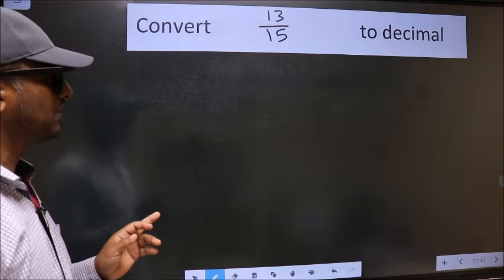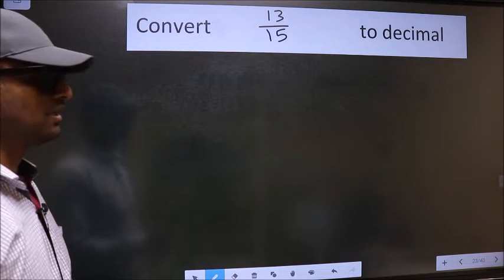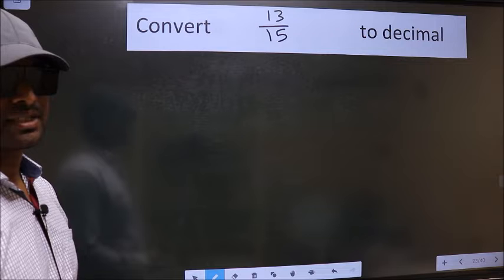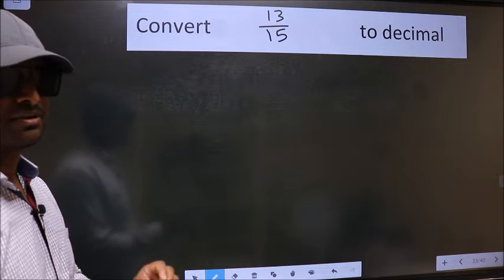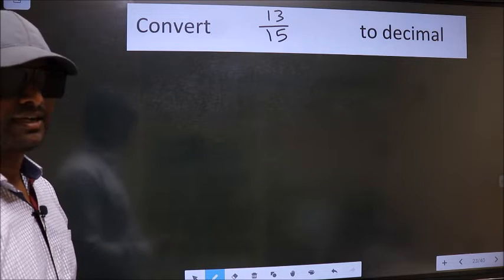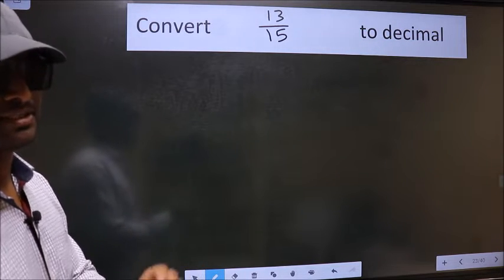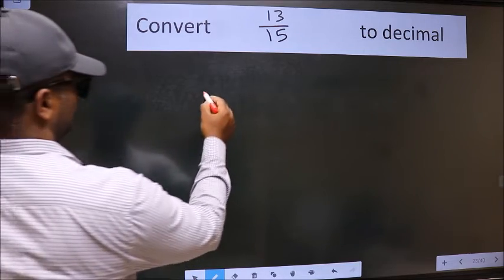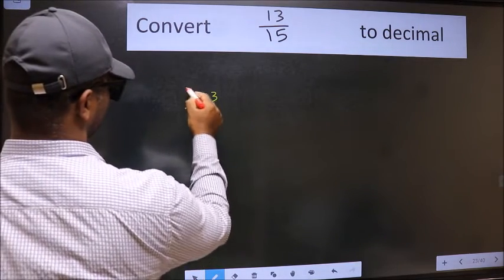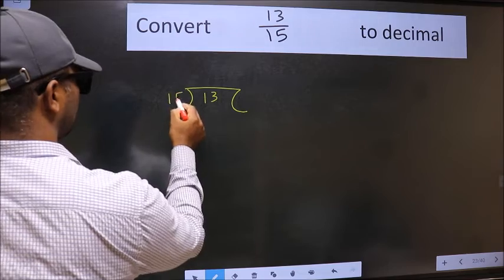Convert 13 by 15 to decimal. To convert to decimal, we have to divide. And to divide, we should frame it in this way — 13 here and 15 here.